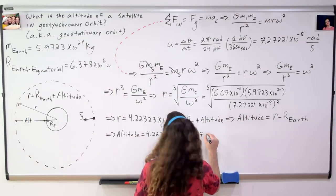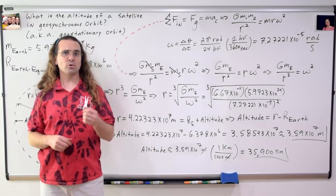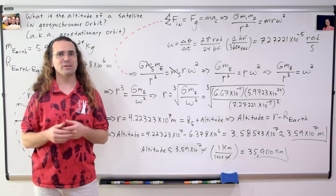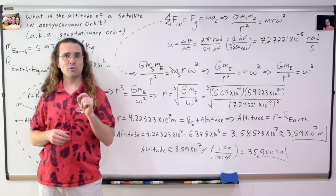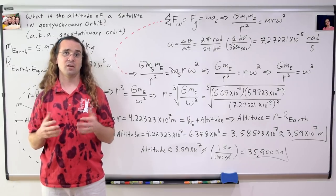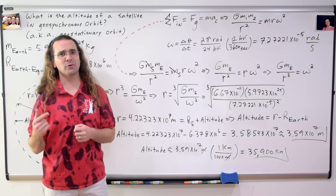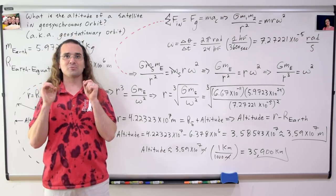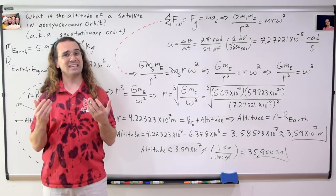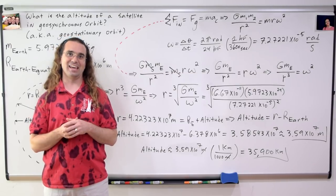From that we can subtract the equatorial radius of the Earth to get 3.58543 times 10 to the 7th, or 3.59 times 10 to the 7th meters with three significant digits. If you visit NASA's website, you will discover that they have published the geosynchronous orbital radius as 35,900 kilometers, which is exactly what we calculated.